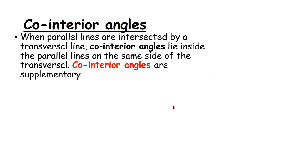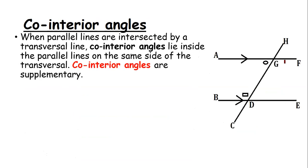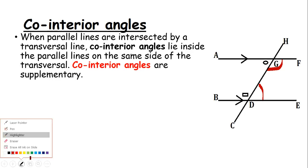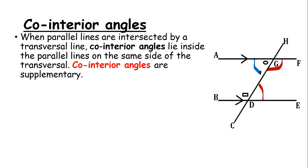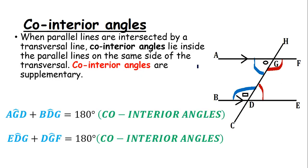Moving on — co-interior angles. When parallel lines are intersected by a transversal, co-interior angles lie on the inside of the parallel lines on the same side of the transversal. Co-interior angles are supplementary. In a diagram where AF is parallel to BE and HC is the transversal, you can see that this angle and this angle are co-interior angles.